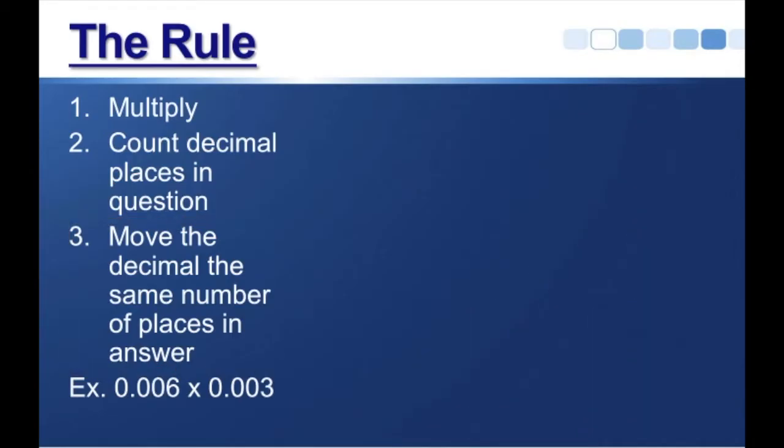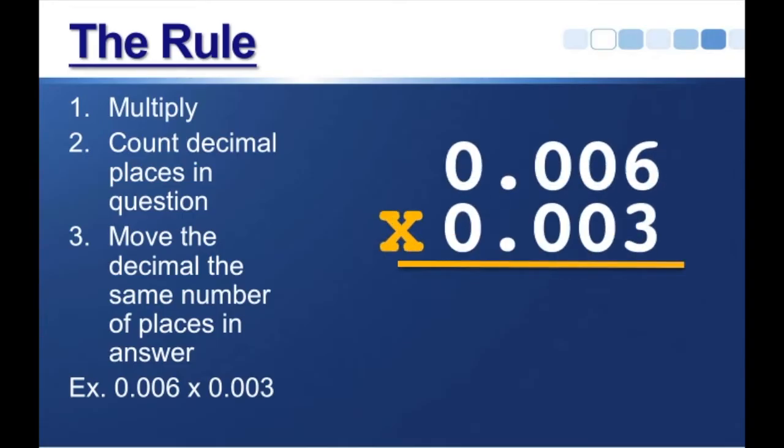And how about this example, 0.006 times 0.003. Well, let's write that down to multiply, and start with step 1, which is just multiply. We've got 3 times 6, which is 18, bring down the 8, carry the 1. 3 times 0 is going to be 0, plus the 1 that we carried is going to be 1. Now, everything that we have here, the rest is all 0's. So we don't really need to multiply. All that's going to do is give us a string of 0's. So it doesn't really matter.